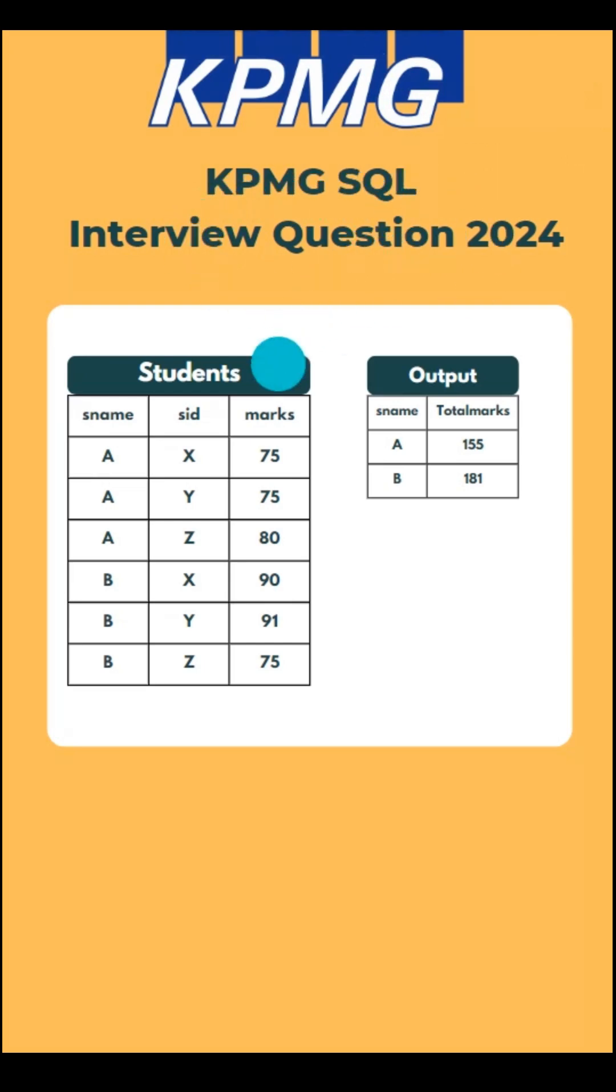KPMG SQL interview question: given a student table with student name, subject ID, and marks, we need to find out student-wise total marks only for the top 2 subjects based on marks.